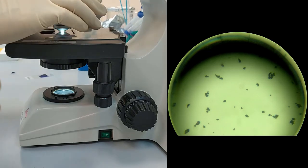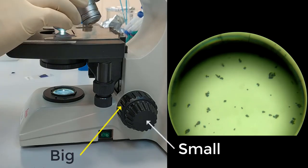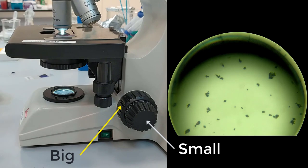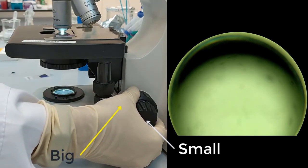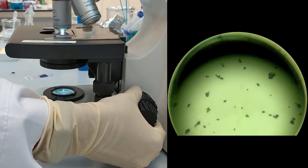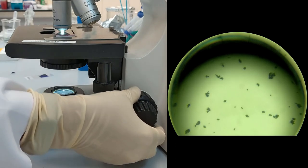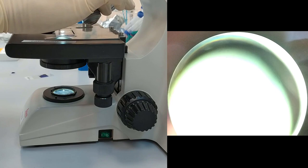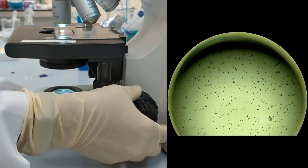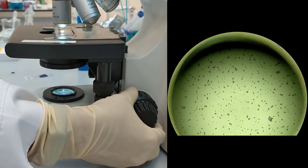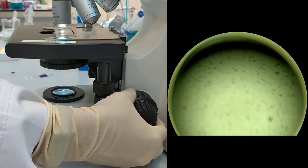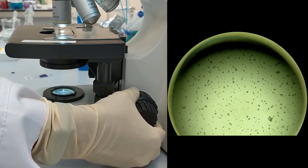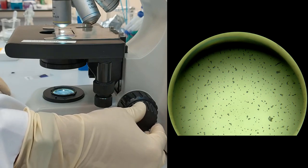On the microscope controls, you can see the big knob and small knobs. On the big knob, we can adjust the focus roughly and using the small knob we can finely tune it.